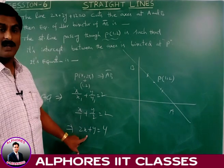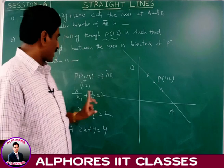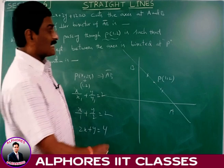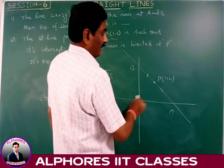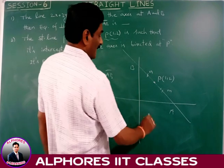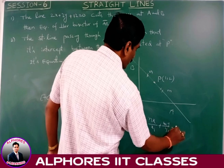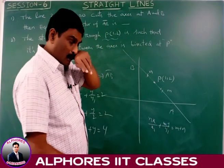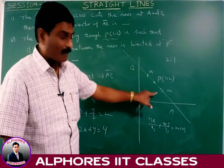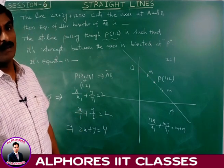Note the general formula: if the midpoint P(x1, y1) is given, the equation of the line is x/x1 plus y/y1 equals 2. If point P divides segment AB in the ratio M to N, the equation becomes Nx/x1 plus My/y1 equals M plus N. For example, if P divides AB in ratio 2 to 1, use this formula to find the equation of the line.